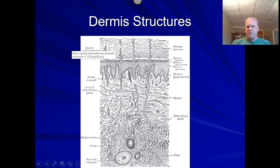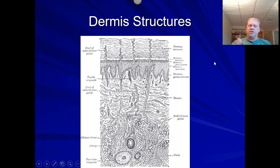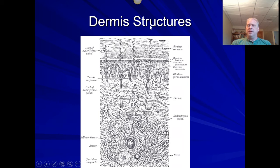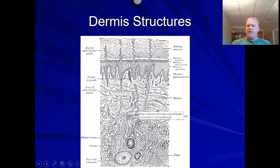Within the dermis, we see ridges — if it were flat, we'd get way more blisters; that top part would slide all over the place. Blisters happen when the stratum corneum separates a little from the stratum lucidum, and fluids rush in to stabilize that separation. A blood blister goes even deeper — that's when the epidermis separates from the dermis. You don't want to pop blisters because you'd create a pathway for bacteria. The deeper the blister, the more painful, because it gets into the receptors down in the dermis.